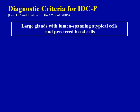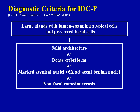The diagnosis of intraductal carcinoma of the prostate can be made confidently if a lesion containing atypical or malignant cells within acini and ducts with preserved basal cells demonstrates one of these four major features: solid architecture, dense cribriform growth pattern, markedly atypical nuclei in which nuclei are six times larger than adjacent benign nuclei, or non-focal comedonecrosis. If any of these features is present, then you can make a confident diagnosis of intraductal carcinoma.